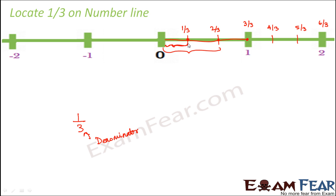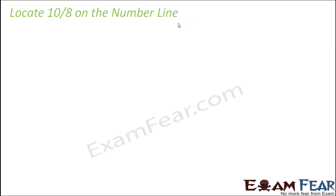The main concept here is you will have to observe the denominator. Once you have observed the denominator, that means you want to locate 1 part out of 3 equal parts, so you need to divide something into 3 equal parts. That something is nothing but each block. So we divide each block into 3 equal parts, and that is how we locate fractions.